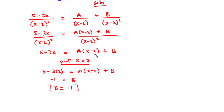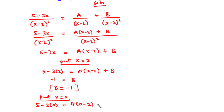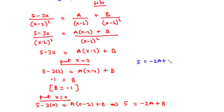Now putting x equals 0 to find A, substituting B equals negative 1: 5 minus 3 times 0 equals A times 0 minus 2 plus B. That gives 5 equals negative 2A plus negative 1. Transposing: 5 plus 1 equals 6 equals negative 2A. Dividing through by negative 2, A equals negative 3.